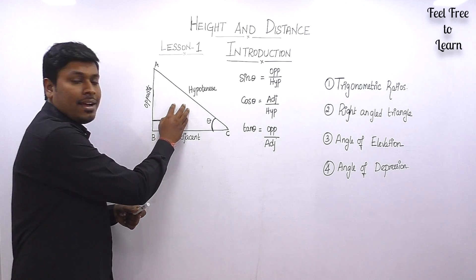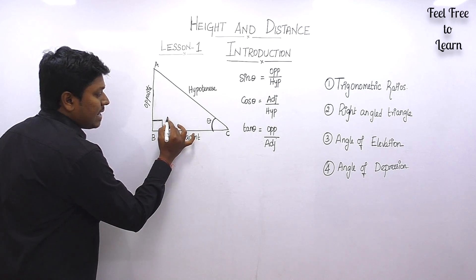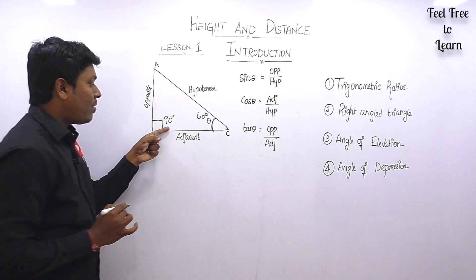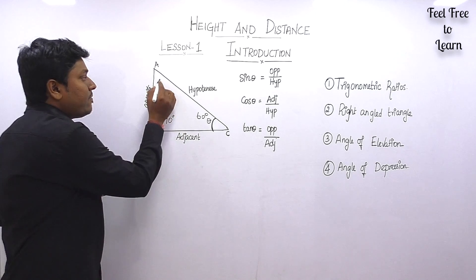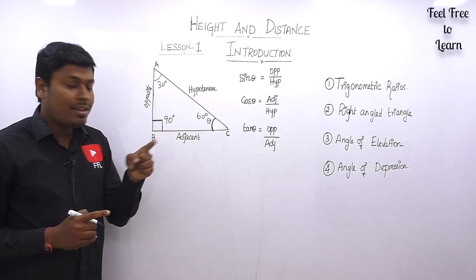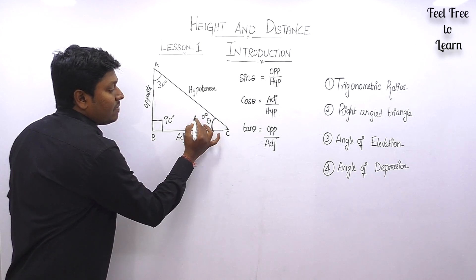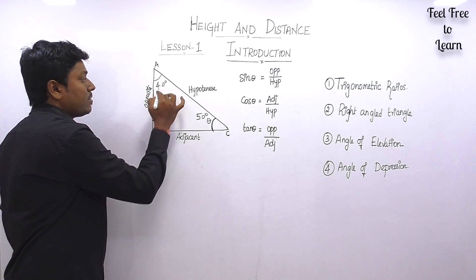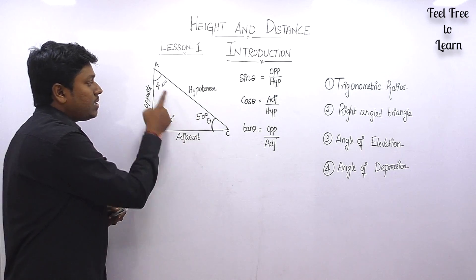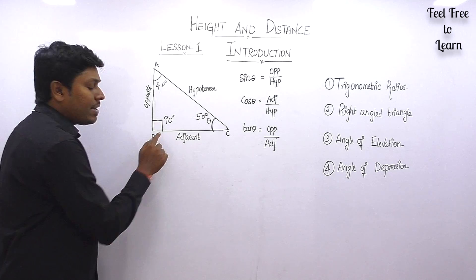In a right angle triangle, one angle will definitely be 90°, and the sum of three angles should equal 180°. For example, if one angle is 90° and another is 60°, then the third angle will be 30°, because 90 + 60 + 30 = 180°. Similarly, if one angle is 50°, then the other will be 40°.